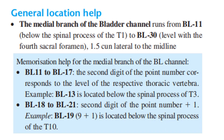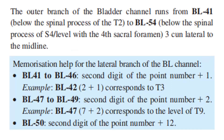For Bladder 18 to Bladder 21, the second digit of the point number plus 1 gives the thoracic vertebra level. For example, Bladder 19: 9 plus 1 is located below the spinous process of T10. The outer branch of the bladder channel runs from Bladder 41 below the spinous process of T2 to Bladder 54, below the spinous process of S4, 3 cun lateral to the midline.